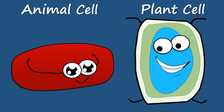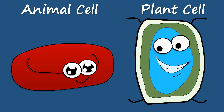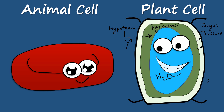Unlike animal cells, plant cells have a rigid cell wall that prevents the cell from bursting. The plant cytoplasm is generally a bit hypertonic to the external environment. Water molecules move from the hypotonic solution towards the hypertonic solution, so water moves in until the internal turgor pressure prevents further intake of water molecules. Thus, the cell has a sufficient amount of water and does not burst.